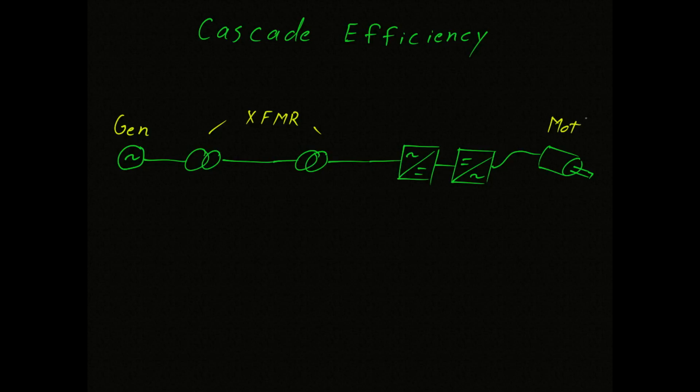This double conversion allows us to transmit the electrical power over long distances with minimal loss. For the rest of our system, we have a motor, but we wanted that motor to operate at variable speed, so we added what's called a variable frequency drive.